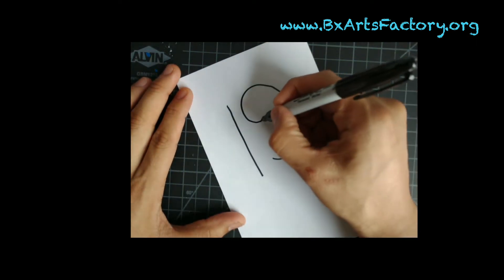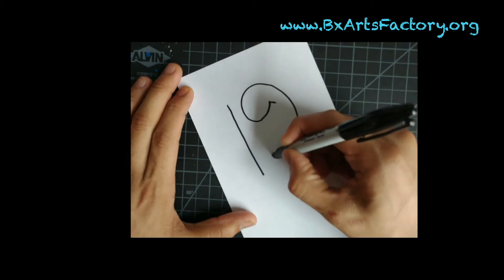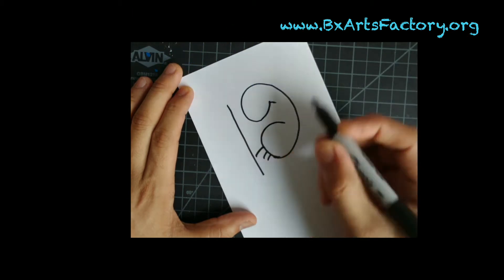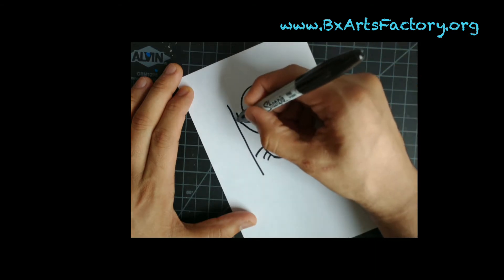So next thing we're gonna do is we're gonna come in a little bit like this. Do this little line here. Bring in this little line right here. Do three sticks. One, two, three. Do a little triangle with a curve. One, two, three.